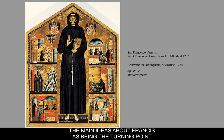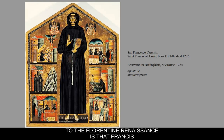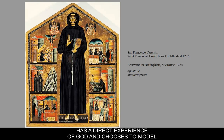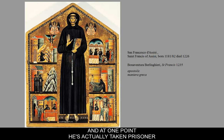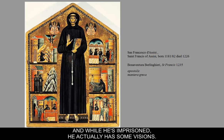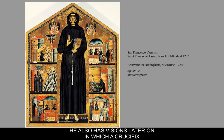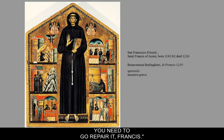The main ideas about Francis as a turning point leading to the Florentine Renaissance are that he has a direct experience of God and chooses to model his life following the lessons Jesus taught. He starts out as the son of a wealthy cloth merchant. At one point he's taken prisoner when Assisi battles a neighboring town, and while imprisoned he has visions. Later, a crucifix speaks to him, saying his house is in ruins and he needs to go repair it.